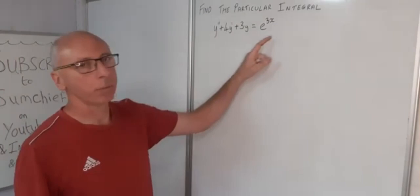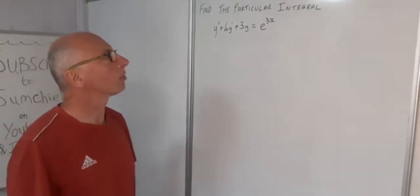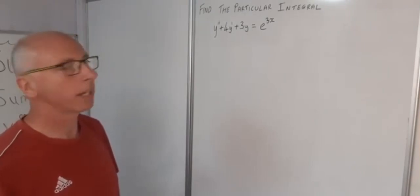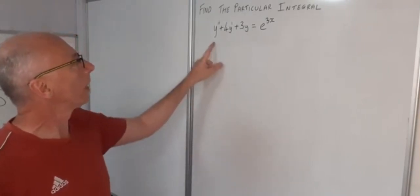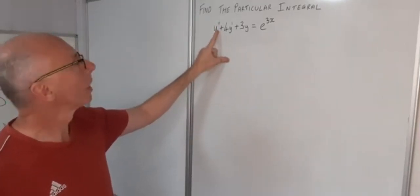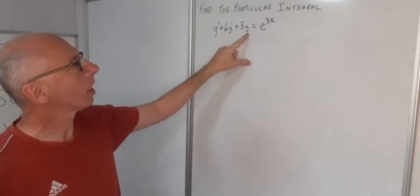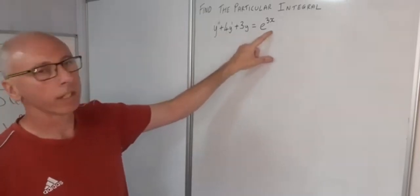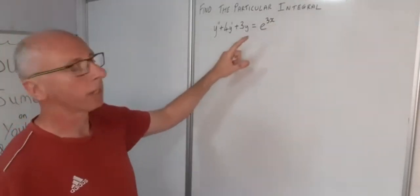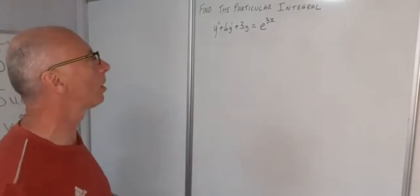In this video we're going to try and find the particular integral for this equation. A particular integral is basically a solution to a non-homogeneous linear differential equation. This equation is of second order because of the y double prime, with a constant multiple in front of the first derivative and three times the function y, and we're going to try and get it to equal e to the 3x. Check the link below for other examples with quadratics and trigonometric functions.